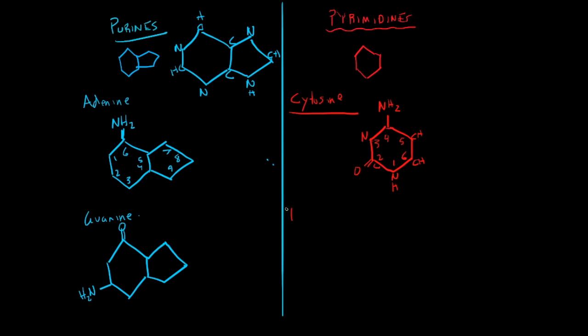Next we will look at thymine, which is only in DNA. So we have the same six ringed molecule. And on this one we can see a double bonded oxygen is now on the four primed carbon and we have a methyl group right here, so a CH3, and we have the same characteristic double bonded oxygen right here.